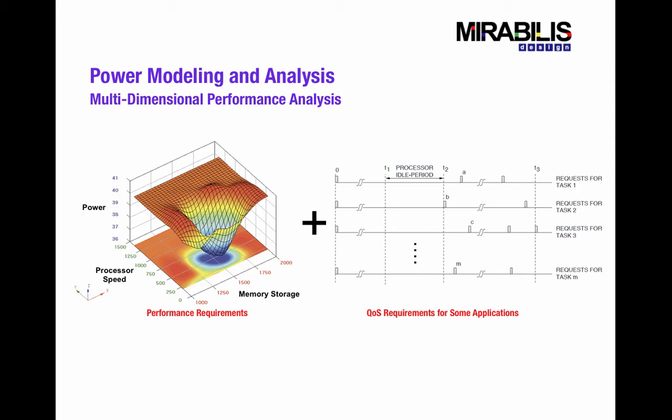On the graph on the left-hand side, the time-based metrics would include processor speed and memory storage. On the right-hand side, the time-based metrics would be quality of service requirements, such as making sure that all tasks meet their deadlines. And in addition to this, we measure power consumed, which is the focus of this video.